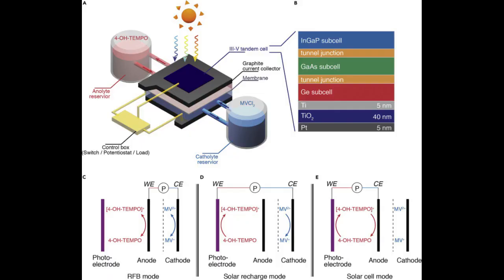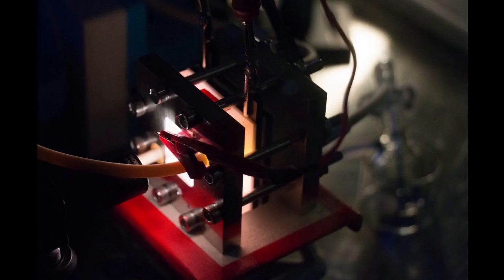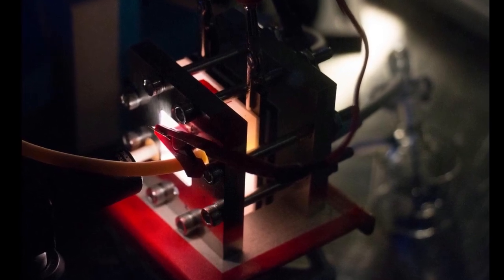The solar flow battery has three different modes. If energy is needed right away, it can act like a solar cell and immediately convert sunlight to electricity. Otherwise, the device can soak up solar energy by day and store it as chemical energy to deliver it later as electricity when night falls or the sky grows cloudy.